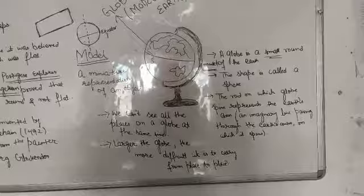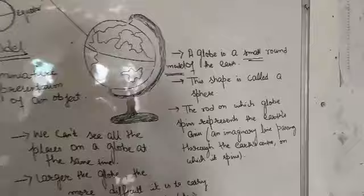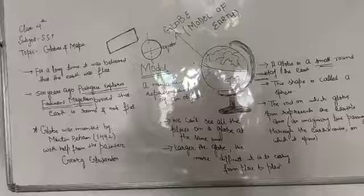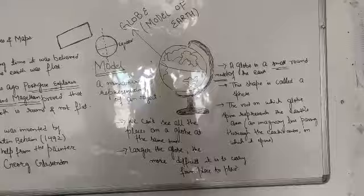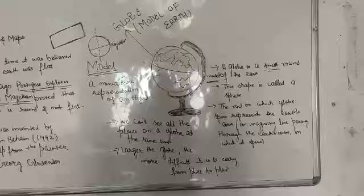It doesn't mean that we have a standard size that we can't change. A globe is a small round model of the earth means that if we compare it to the size of the earth, globe size is very small and the globe is in round shape.